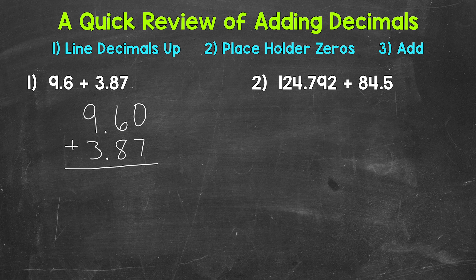So we'll start with the hundredths: 0 plus 7 is 7. Then we'll move to the tenths: 6 plus 8 is 14, so we carry our 1. Now our decimal goes straight down into our answer. It's lined up throughout the entire problem. Now we'll move to the ones place, where we have 1 plus 9 plus 3. 1 plus 9 is 10, plus 3 is 13. So we'll put our 3, and then our carried 1 will be brought straight down. And we end up with 13 and 47 hundredths.